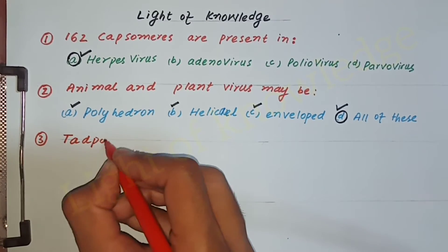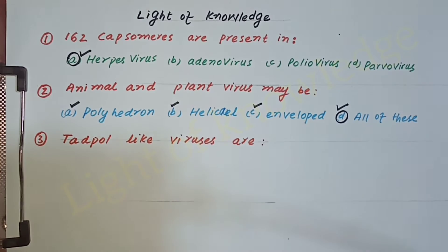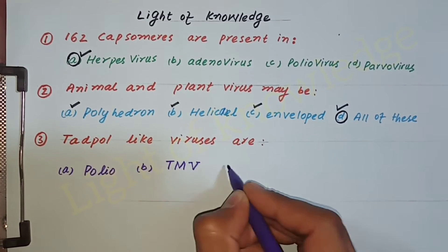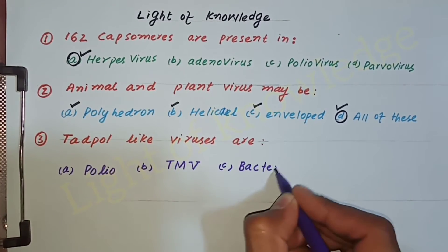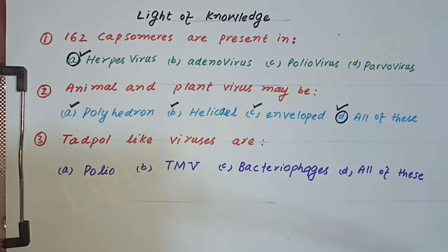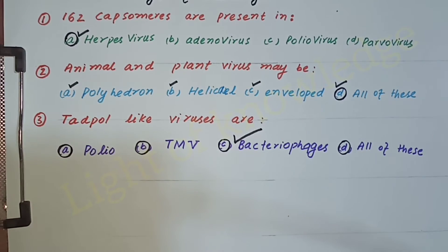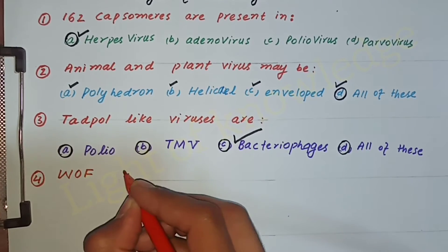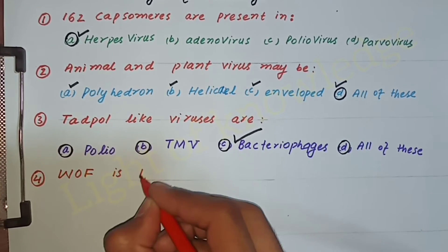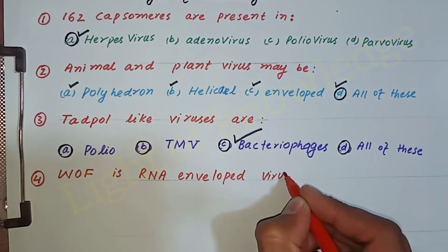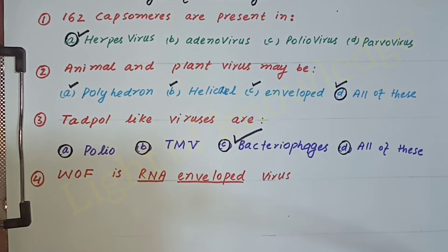Question number three: Tadpole-like viruses are — polio, TMV, bacteriophage, or all of these? The correct answer is C — bacteriophage. Bacteriophage is tadpole-like. Polio is spherical, and TMV is rod-shaped.